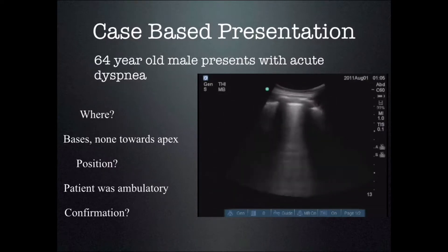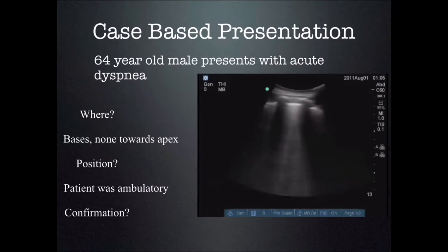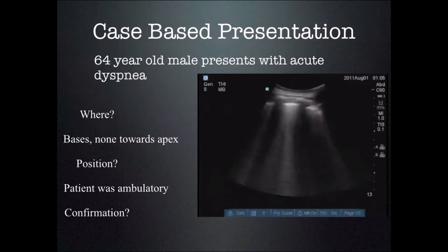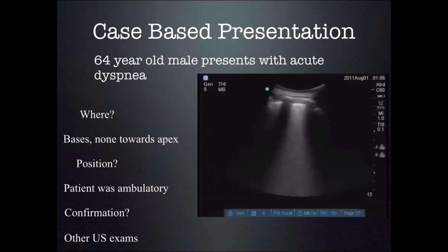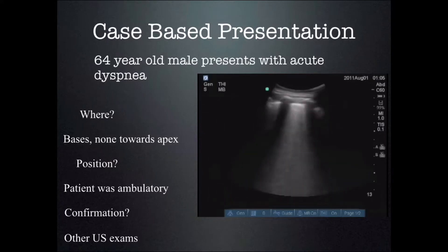So what was the patient doing before they came in? They were ambulatory — this makes sense. They were walking around; fluid is heavier than air so it settled into the bases. That tells us this is dependent edema. We think this patient, who comes in with acute chest pain and shortness of breath, has dependent pulmonary edema. What other exam could we combine to make the diagnosis?